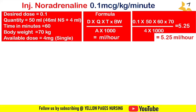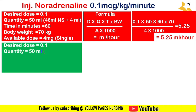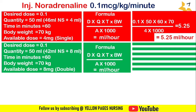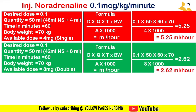For double strength: desired dose = 0.1, quantity = 50 ml (42 ml normal saline + 8 ml noradrenaline), time = 60 minutes, body weight = 70 kg, available dose = 8 mg. Applying the formula gives the answer: 6.62 ml per hour.